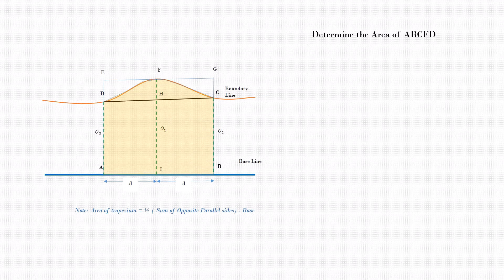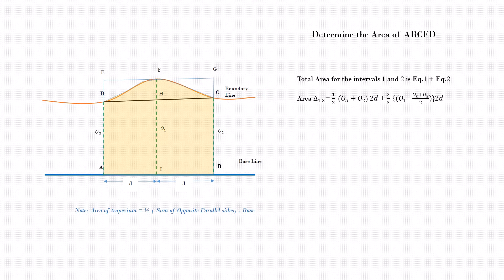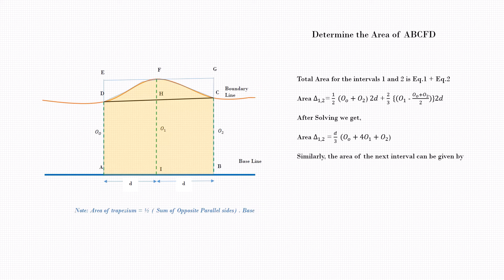We can now calculate the total area for intervals 1 and 2 as the area of the segment plus the area of the trapezoid. Area of interval 1–2 = (1/2)(O0 + O2)(2D) + (2/3)(O1 − (O0 + O2)/2)(2D). After solving, the area of interval 1–2 = D/3 × (O0 + 4O1 + O2).